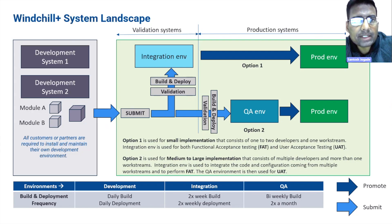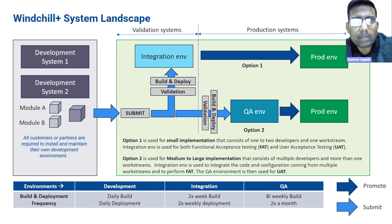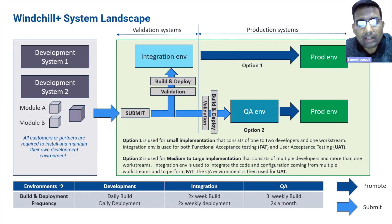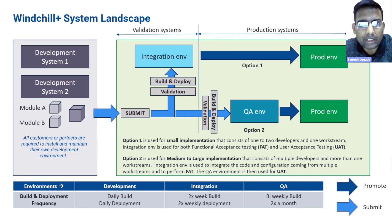Let me quickly take you to the Windchill Plus system landscape. Any customer who subscribes to Windchill Plus gets two environments by default: the production environment and the integration environment. This is suitable for small-scale PLM implementations with one development stream and a small team. All code deployment and integration testing, functional testing, and user acceptance testing can be done on the integration environment, and then the package is deployed onto production.